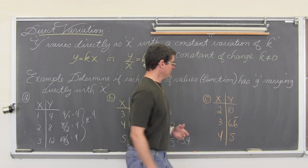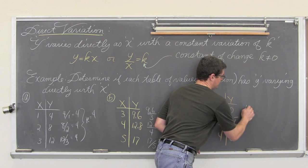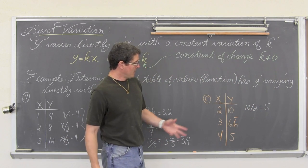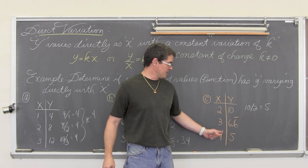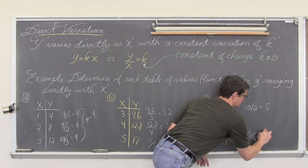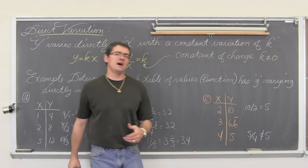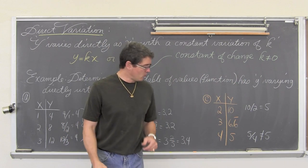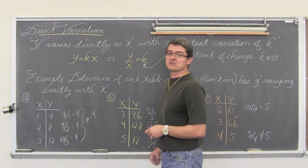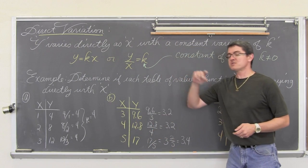And then finally over here, we have 10 divided by 2, which is equal to 5. And now, I am not going to check all of these because clearly 5 divided by 4, that doesn't equal 5. It is actually 1 and 1 fourth. So, the only one of these functions that represents direct variation is the first table of values.